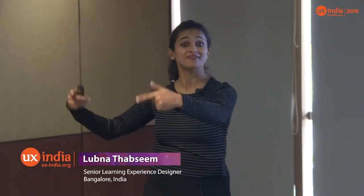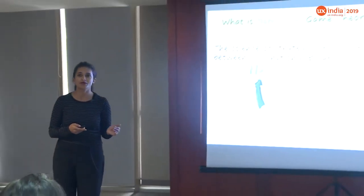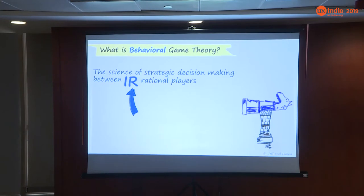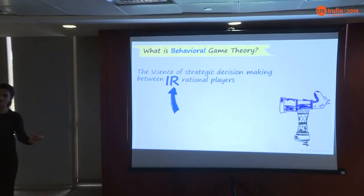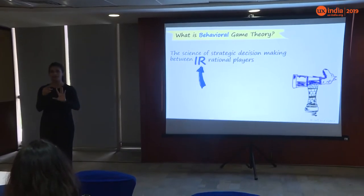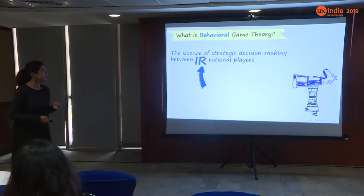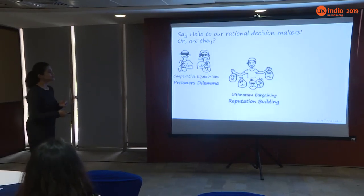Game theory uses principles to calculate strategies and evaluate an opponent's strategy to be in a winning position, making decisions that can be leveraged for benefit. Traditional game theory assumes human beings are rational, but we're emotional beings. This gave way to behavioral game theory, where all the research centers around the assumption that human beings are irrational and make decisions based on BPC — beliefs, preferences, and constraints.